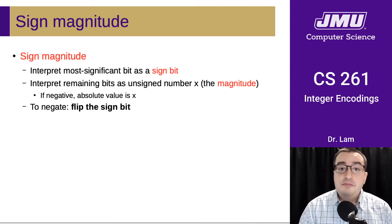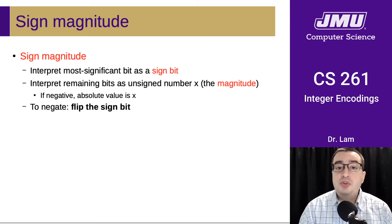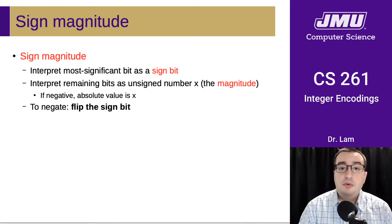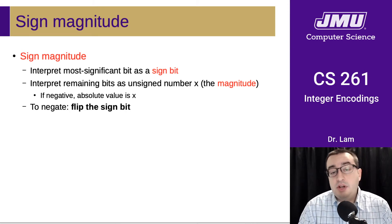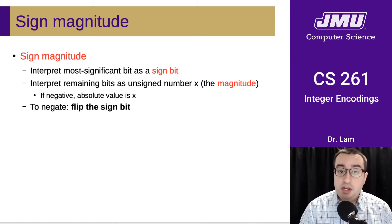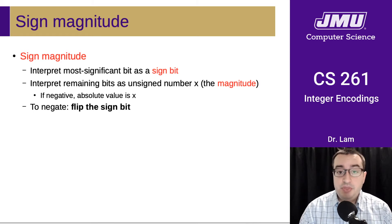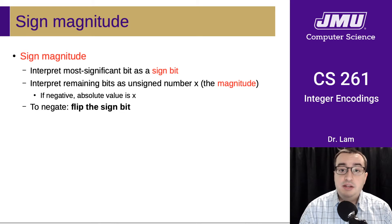Sign-magnitude is a way of representing signed integers where you interpret the most significant bit as a sign bit. When you're writing the binary out in the normal way with the most significant bit first, it's going to be the leftmost bit. If that bit is zero, you have an ordinary unsigned number. If it's one, then under sign-magnitude it is a negative number, and you interpret the remaining bits as an unsigned number x to determine the value.